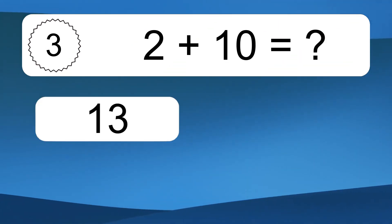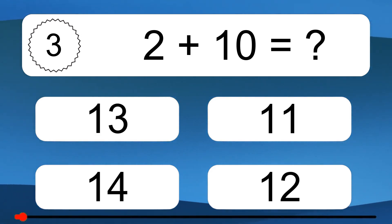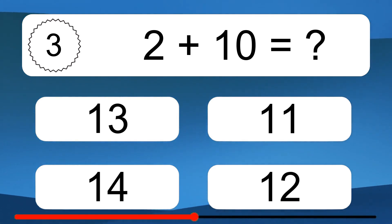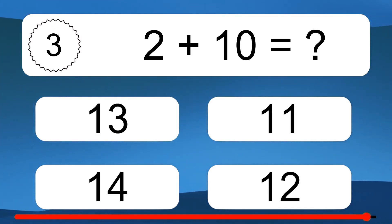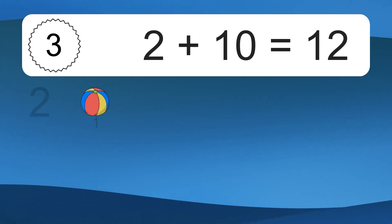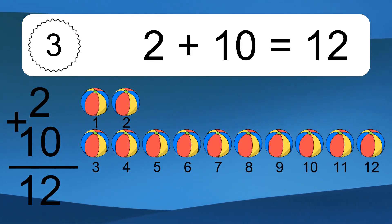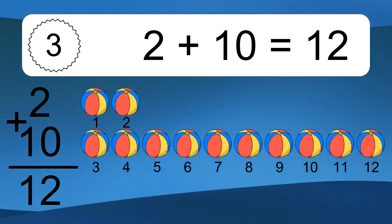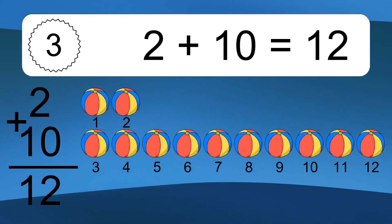2 plus 10 equals what? 2 plus 10 equals 12. Let's count it: 1, 2, 3, 4, 5, 6, 7, 8, 9, 10, 11, 12.